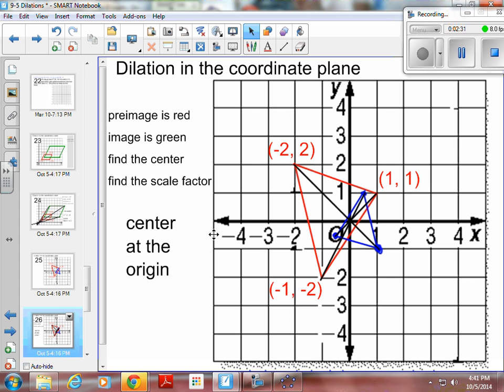And then what's the scale factor? This one's a lot harder to tell. You'd have to use your distance formula to figure this one out. And I'm not going to take the time to do that on here. But you would find the distance of, say, this side up here from negative 2, 2 to 1, 1. And that one matches up with this 1, 1 to negative 1, negative 1. You'd find the two distances. And then find out how much you multiply to get from one to the other.